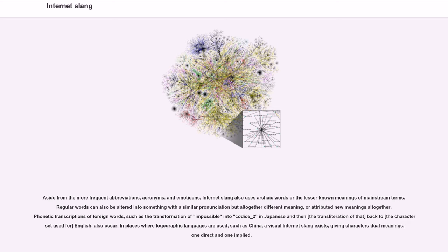Aside from the more frequent abbreviations, acronyms, and emoticons, Internet Slang also uses archaic words or the lesser-known meanings of mainstream terms. Regular words can also be altered into something with a similar pronunciation but altogether different meaning, or attributed new meanings altogether. Phonetic transcriptions of foreign words, such as the transformation of 'impossible' into a Japanese equivalent and then the transliteration of that back into English characters, also occur.